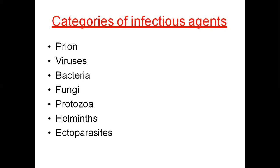Prions are a further category related to spores. The second category is viruses, which you have already studied in microbiology. Types of viruses include RNA-related and DNA-related viruses, enveloped and non-enveloped viruses. Viruses are transmitted in the form of infection via nucleic acid sequencing — that is, protein, RNA, and DNA.